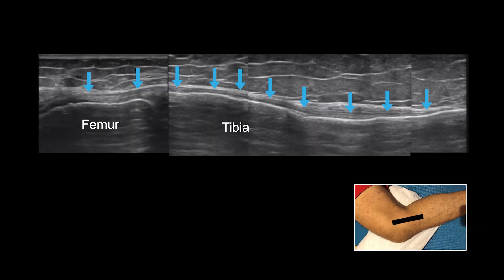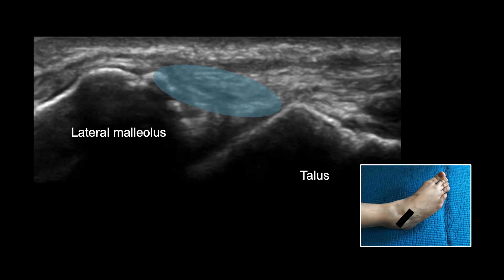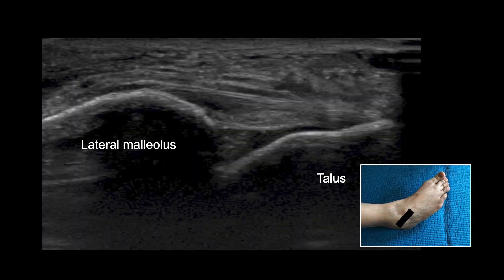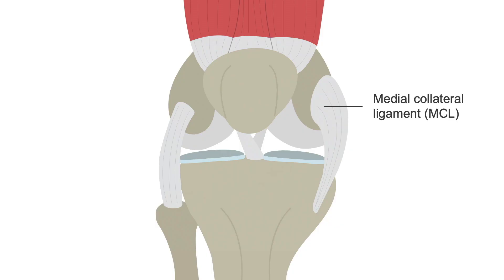This image shows the longitudinal view of a normal medial collateral ligament of the knee. This next image shows non-visualization of the ligament fibers of the anterior talofibular ligament. Also note the bony irregularity of the attachment site on the fibula or lateral malleolus, suggesting an avulsion-type tear. This longitudinal view of the anterior talofibular ligament shows a focal hypoechoic defect closer to the fibular attachment site, suggestive of a grade 2 sprain or partial tear.